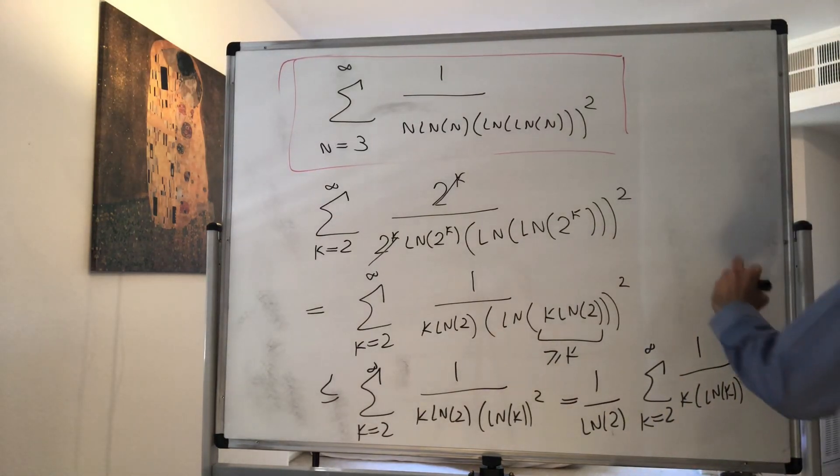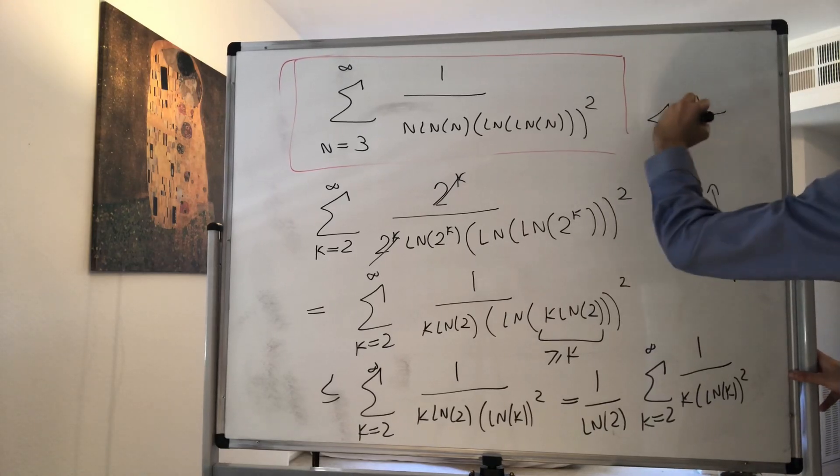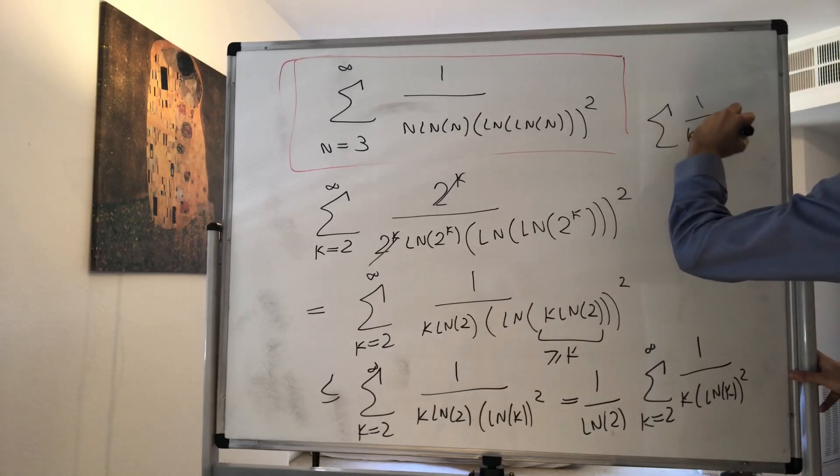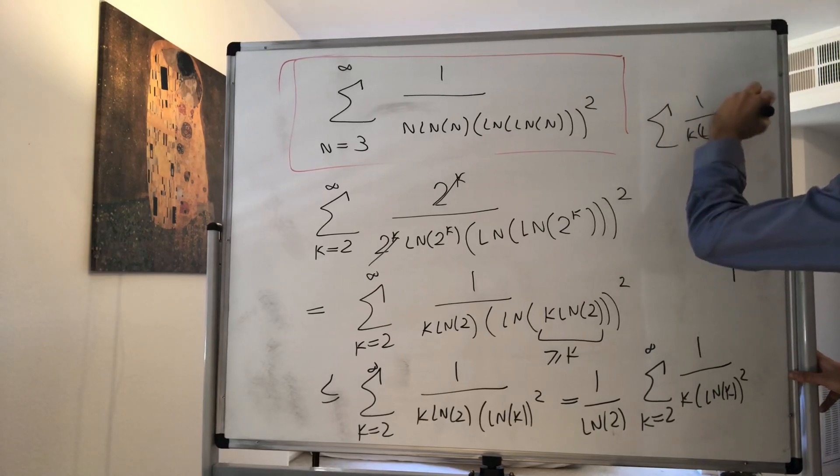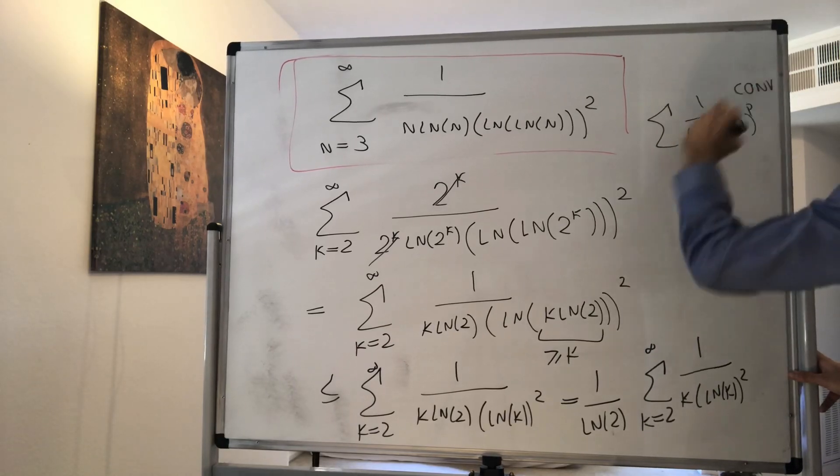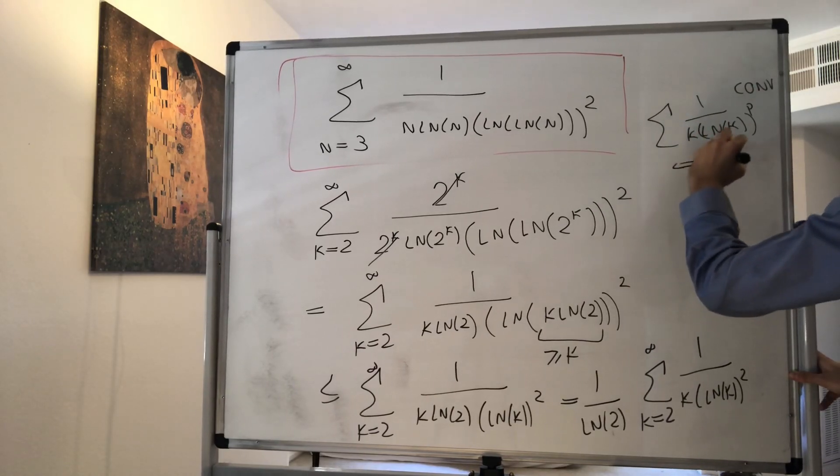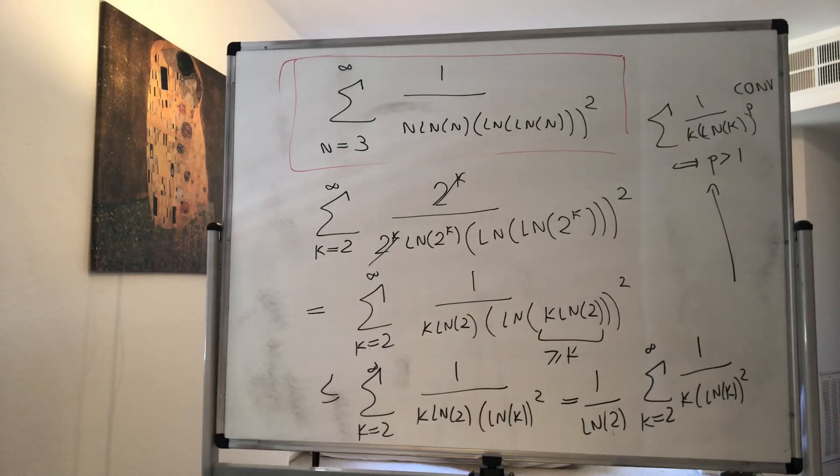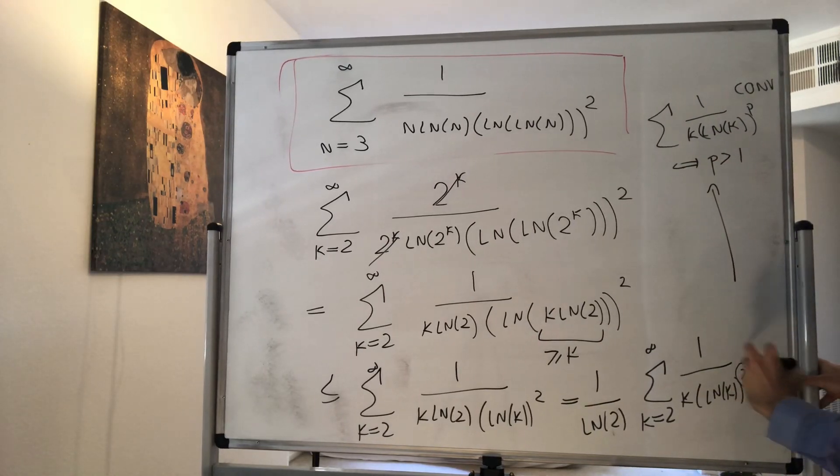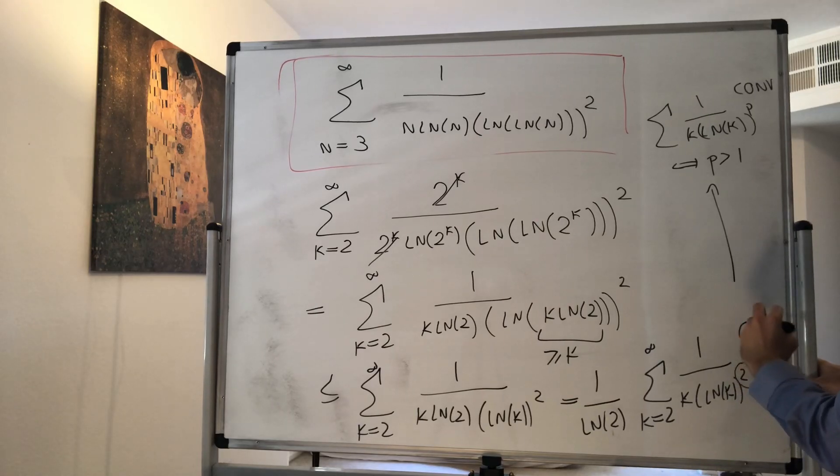However, from a previous video, we have shown that the sum over k ln of k to the p converges if and only if p is greater than 1. Because we converted it into a p series, but now 2 is greater than 1, so this converges.